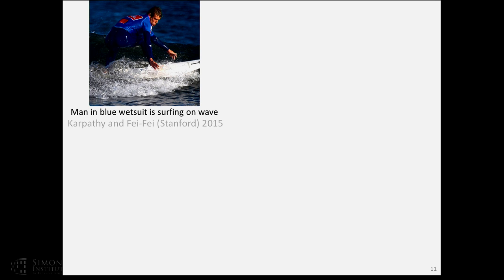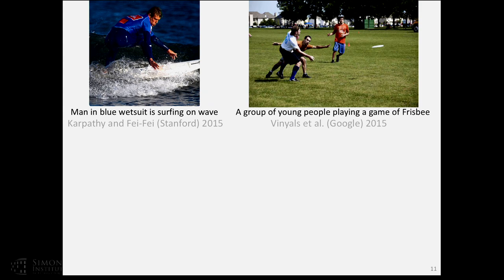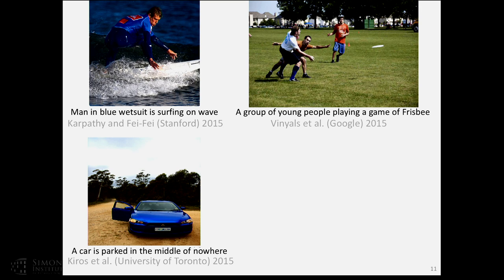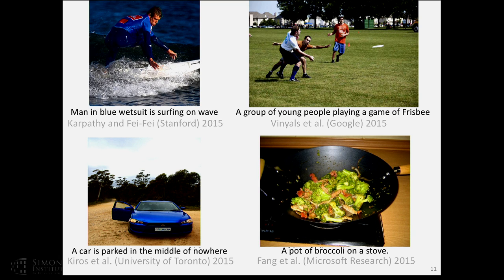We've made a lot of progress as a community in connecting images to language. We now have algorithms that can automatically take an image and describe it — for example, 'man in blue wetsuit is surfing on wave,' or 'a group of young people playing a game of frisbee,' or 'a car is parked in the middle of nowhere,' or 'a pot of broccoli on a stove.' We've become quite good at recognizing obvious things in an image and stitching it into a natural-sounding sentence.